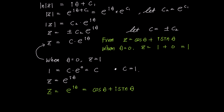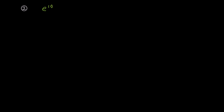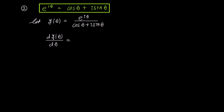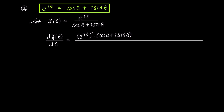Now let's prove this formula using differentiation. First, let's write Euler's formula, then define a function of theta, denoted as y, as e to the power of i theta over cosine theta plus i sine theta. Now let's differentiate y with respect to theta using the quotient rule. The numerator becomes the derivative of e to the power of i theta times cosine theta plus i sine theta, minus e to the power of i theta times the derivative of cosine theta plus i sine theta, and the denominator is cosine theta plus i sine theta squared.